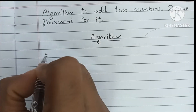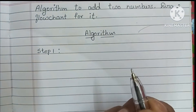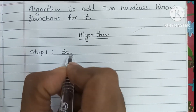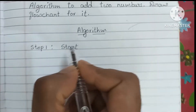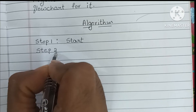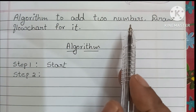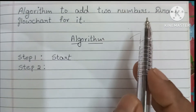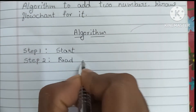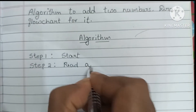Step one in the algorithm always contains the start statement, so we have to write the start statement. In step two, we have to read the input values. In this question we have to add two numbers, so we have to read two numbers — that is variable a and variable b.